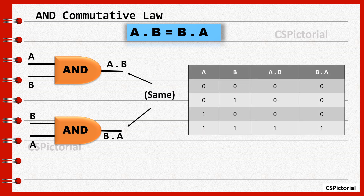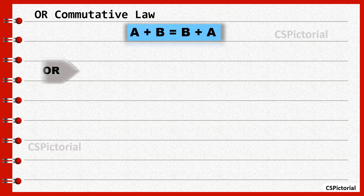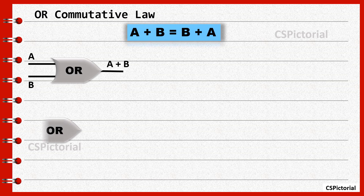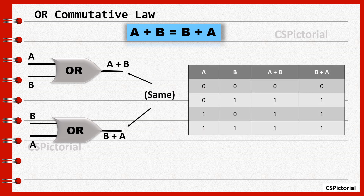The truth table output is 0, 0, 0, 1 for inputs A dot B and also when it is B dot A. Or commutative law: A plus B equals B plus A. The OR gate output for inputs A plus B is similar to the OR gate output for inputs B plus A. The truth table output is 0, 1, 1, 1 for inputs A plus B and also when it is B plus A.